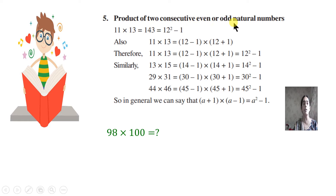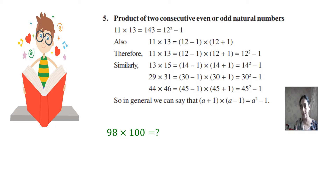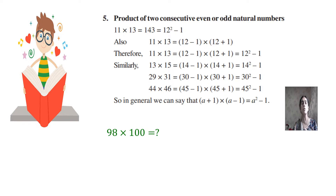For odd numbers, we know the numbers 1, 3, 5, 7, 9, 11, 13 — they are all odd numbers. There are infinitely many odd and even natural numbers. So two consecutive odd natural numbers: if I take 1, the next is 3; if I take 3, the next is 5; if I take 9, the next odd number is 11. So 9 and 11 are two consecutive odd natural numbers.